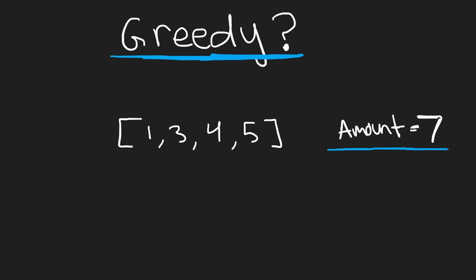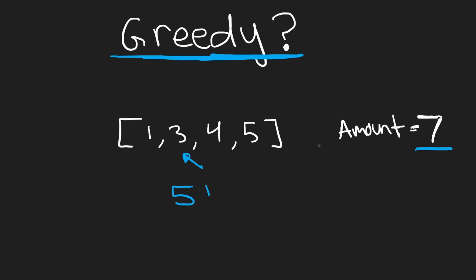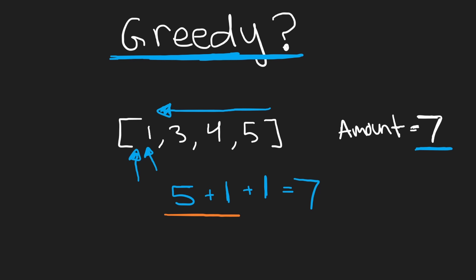When I say greedy, I mean we start at the biggest coin — five. Adding another five goes over seven. Five plus four also goes over. Five plus three goes over too. But we have a one, so we add one to get six, then add a second one to reach seven. Going from the biggest to smallest coin values, this took us three coins, so our result in this case would be three.